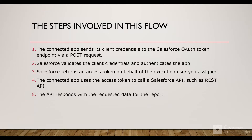Let's see the steps involved in this flow. Firstly, the connected app sends its client credentials to the Salesforce OAuth token endpoint via a POST request — that is the consumer key and the consumer secret. Then Salesforce validates those client credentials and authenticates the app. Salesforce returns the access token on behalf of the execution user assigned in the connected app. The connected app then uses that access token to call Salesforce APIs such as the REST API to access the required data.